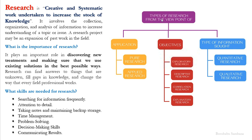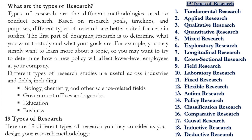According to various research factors, research is divided into three main categories: application mode, objective mode, and type of information sought. Within this, research is further categorized into various factors — mainly divided into 19 types.